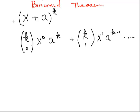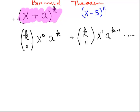So suppose we start off with an expression like this, x plus a to the power of k. That could be something like x minus 5 to the power of 11, something like that. a is constant, k is a constant, and x is just x, so some sort of polynomial.